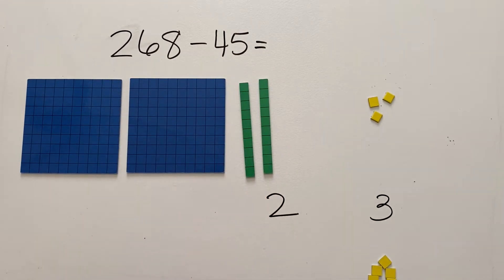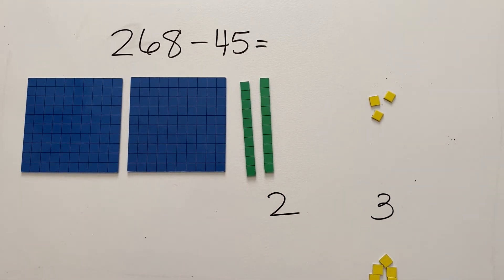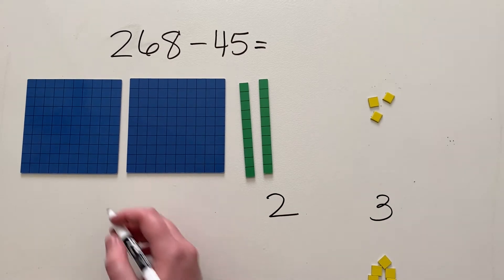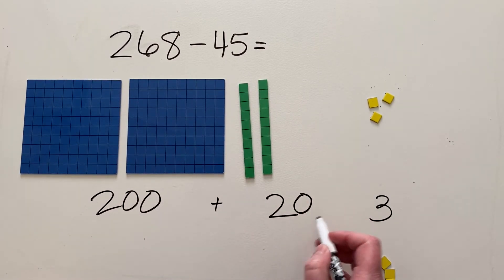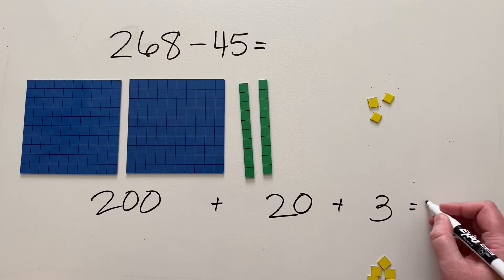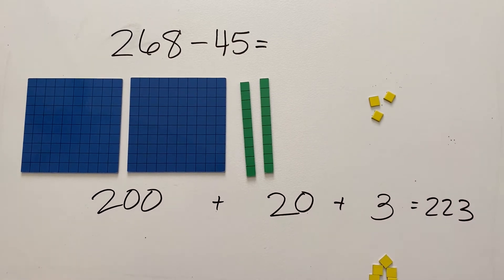And in the hundreds place we have 200, and there's nothing that we are subtracting in the hundreds, so I'm just going to leave it like that. And what we have here is 200, that 2 is 2 tens so 20, and 3, which equals 223.